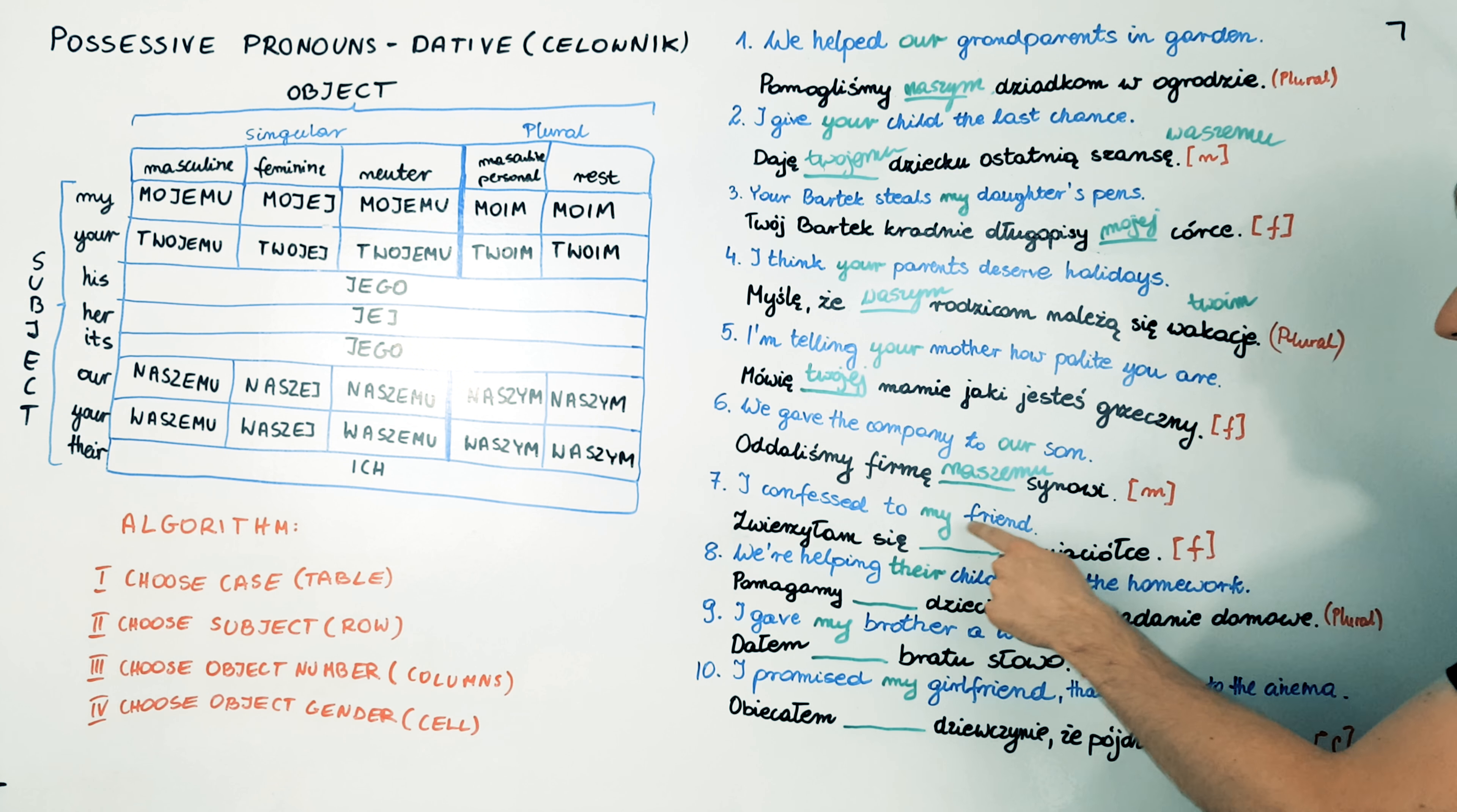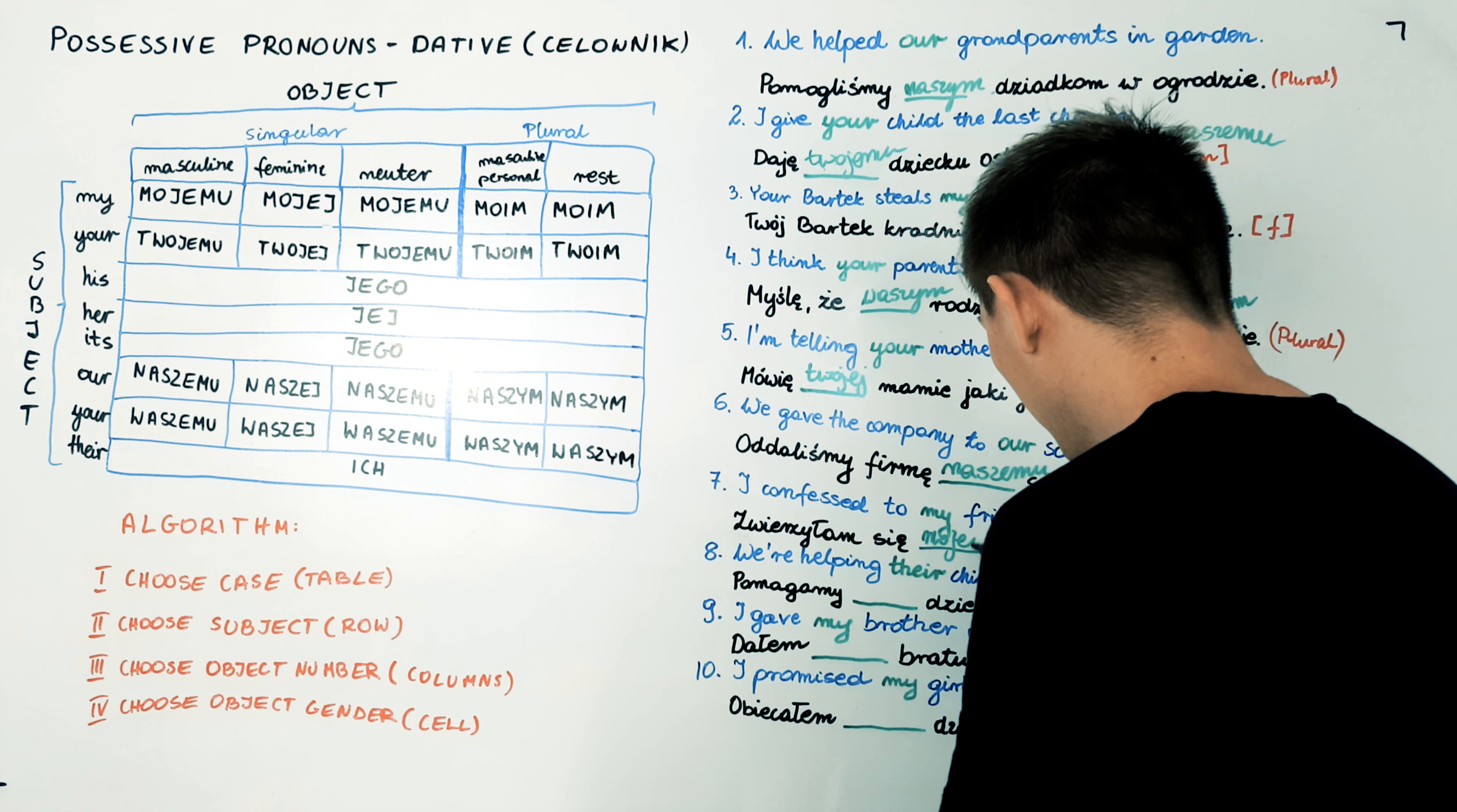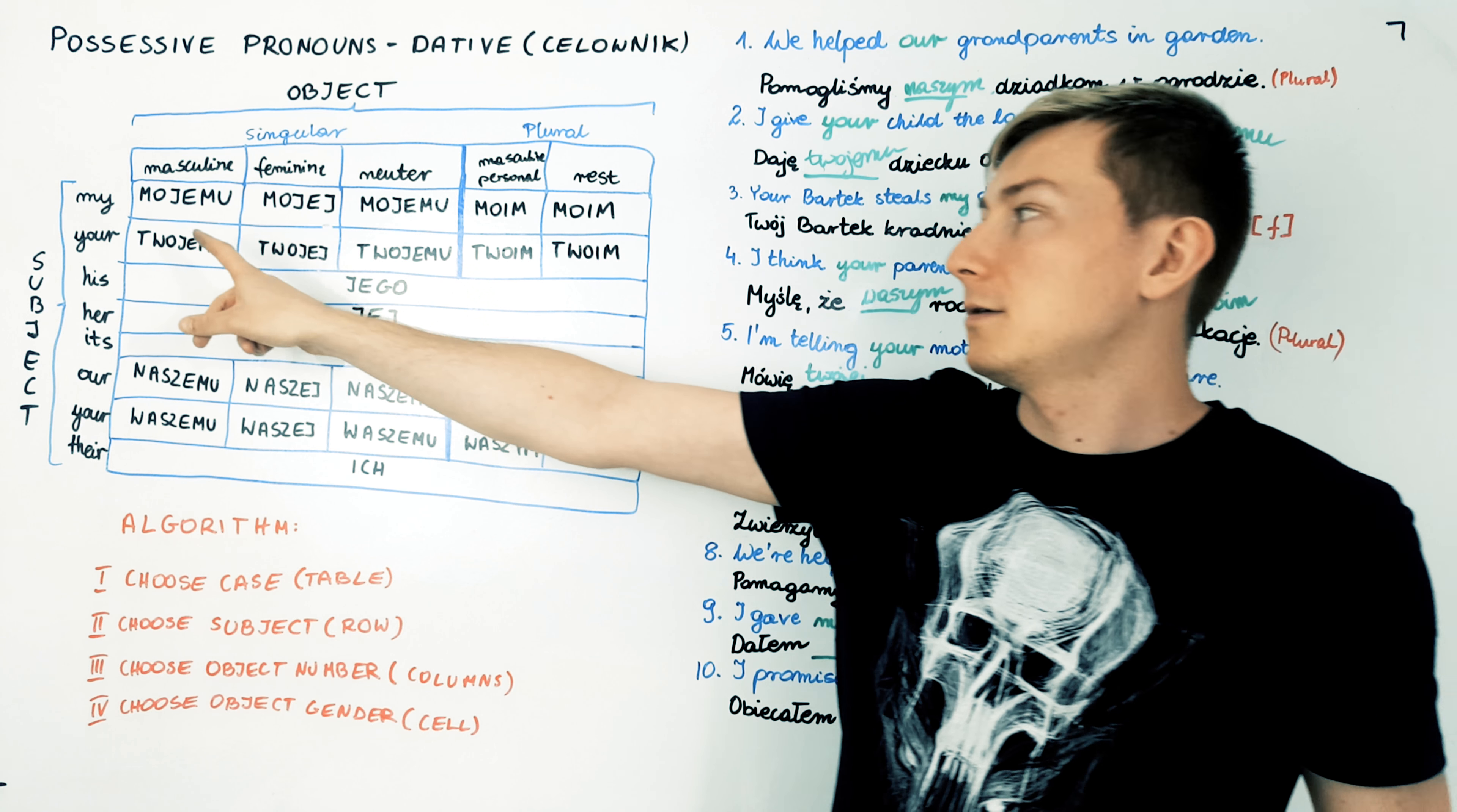I confess to my friend. Zwierzyłam się mojej przyjaciółce. So in English we have only friend for feminine and masculine, but in Polish we have two different words. Przyjaciel, przyjaciółka for masculine and feminine. So here we have the version of feminine friend.